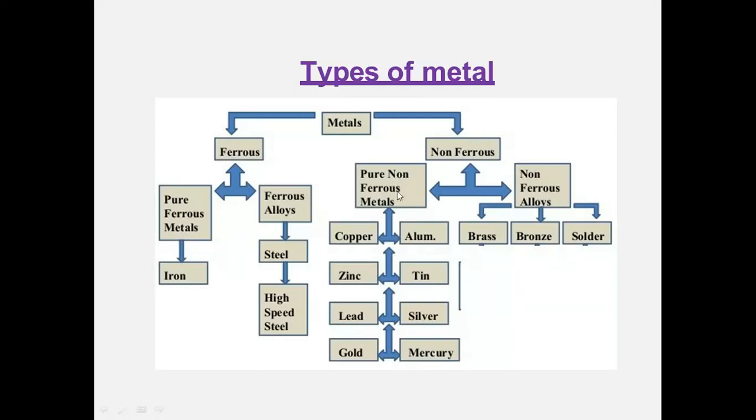Non-ferrous has two categories: pure non-ferrous metals and non-ferrous alloys. Alloys include brass, bronze, and solder. Pure non-ferrous metals include copper, aluminum, zinc, tin, lead, silver, gold, and mercury. Based on the mechanical properties and the application, we select suitable material. Thank you.